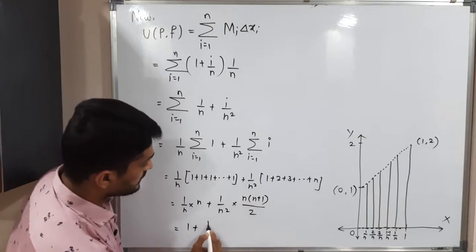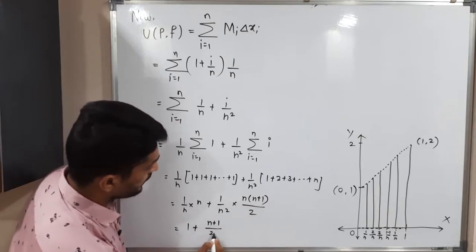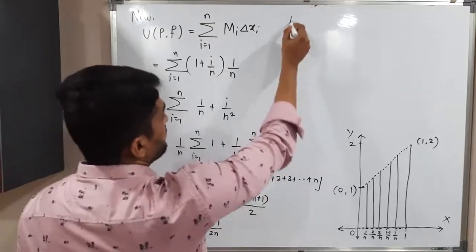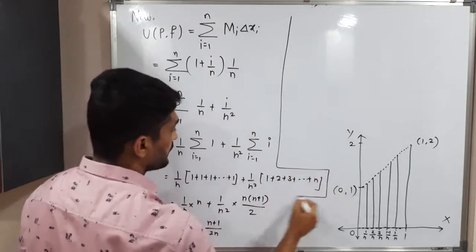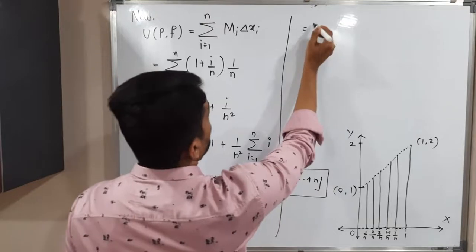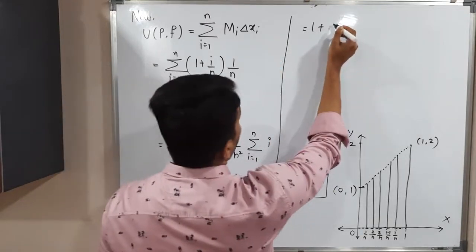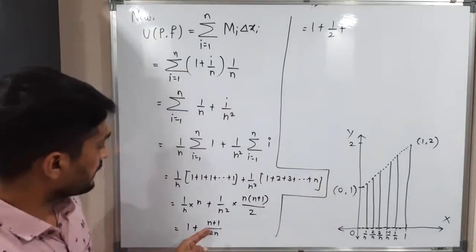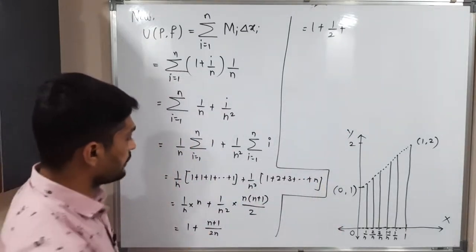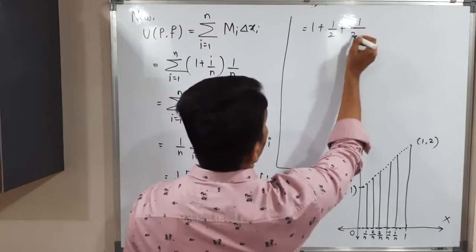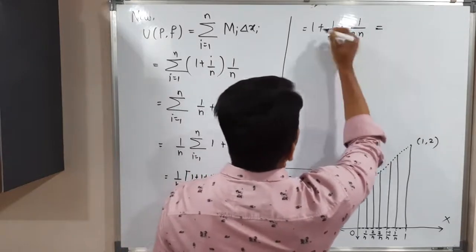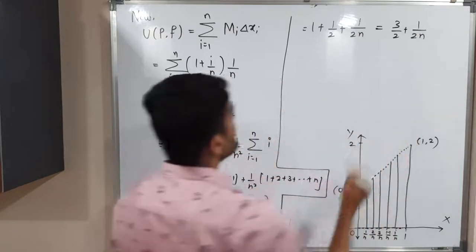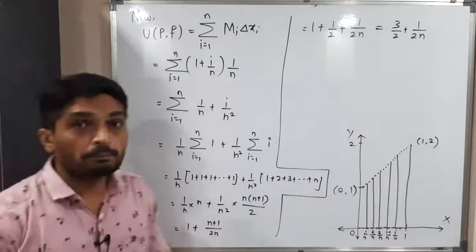After simplification: the first term gives 1, and the second term (1/n²) · n(n+1)/2 simplifies to (n+1)/(2n) = 1/2 + 1/(2n). Adding these together, U(P,f) = 3/2 + 1/(2n). This is the value of the upper sum.